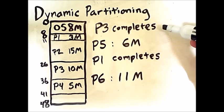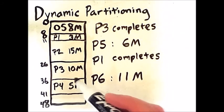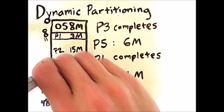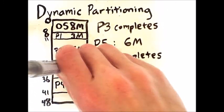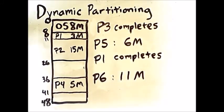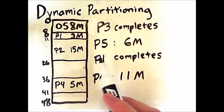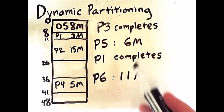Process 3 completes. That means it will be erased from memory, and that space will become available to other processes. Next, process 5, a new process, appears and requests 6 megabytes. Now, there are actually two different places we can place process 5.